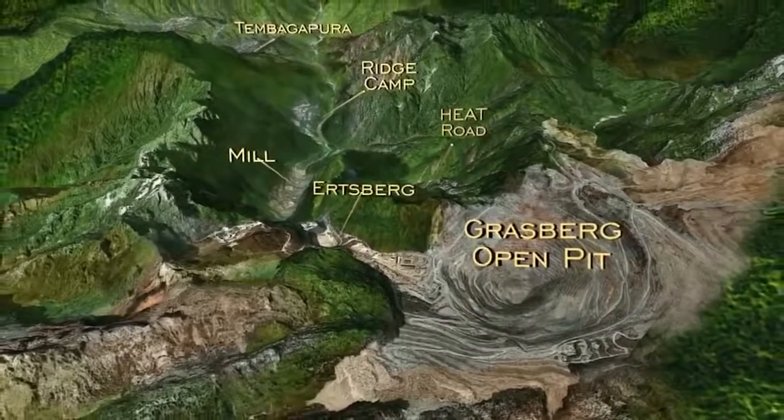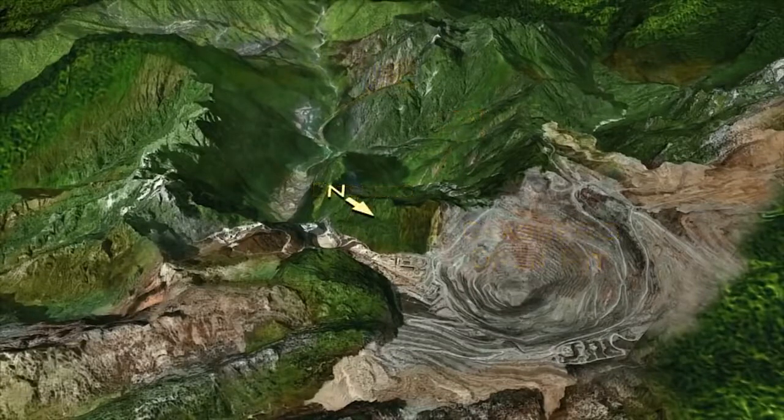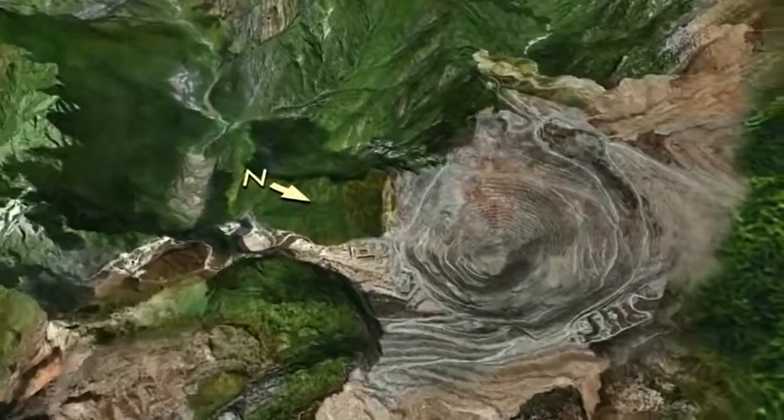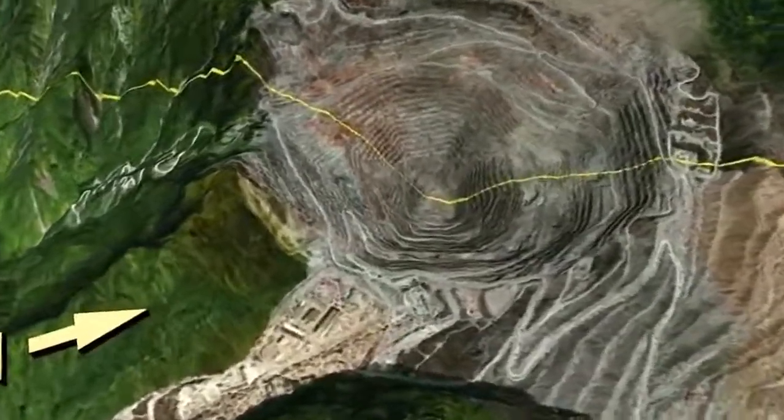At the top of the project area lies Contract of Work Area A, the heart of which is the Grasberg Minerals District. It is well known as one of the world's greatest ore zones, containing one of the world's largest single reserves of both copper and gold.